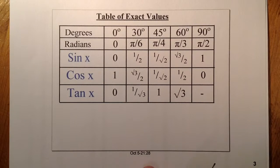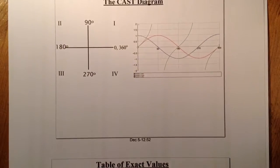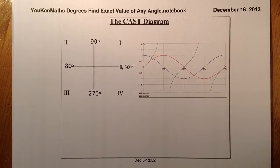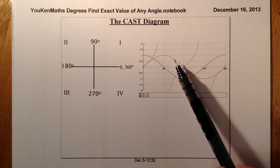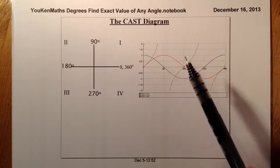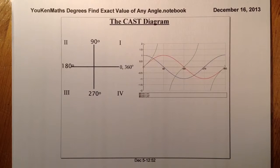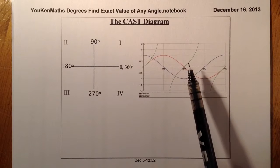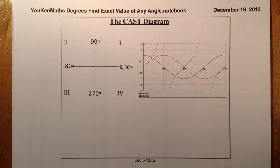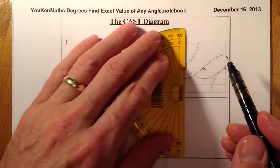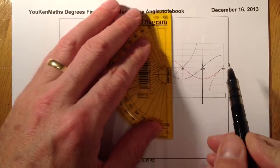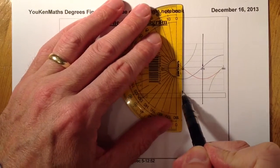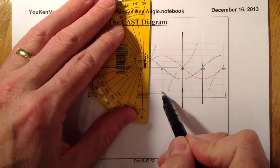I use the CAST diagram for that. The CAST diagram is made up from a series of curves: the red curve being the sine, the blue being the cosine, and the green being the tan curve. I'm going to split this diagram and transfer the graphs up into quadrants, so I can relate the quadrants back to the CAST diagram.